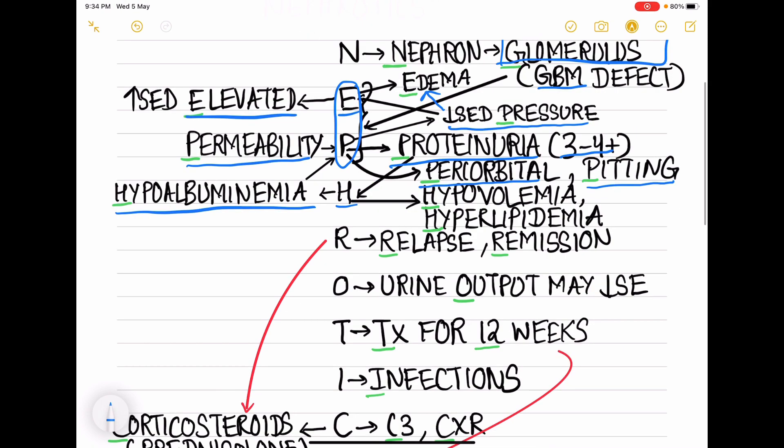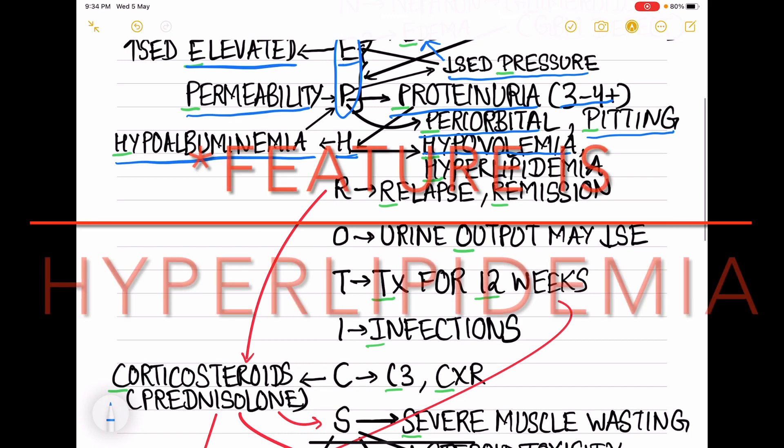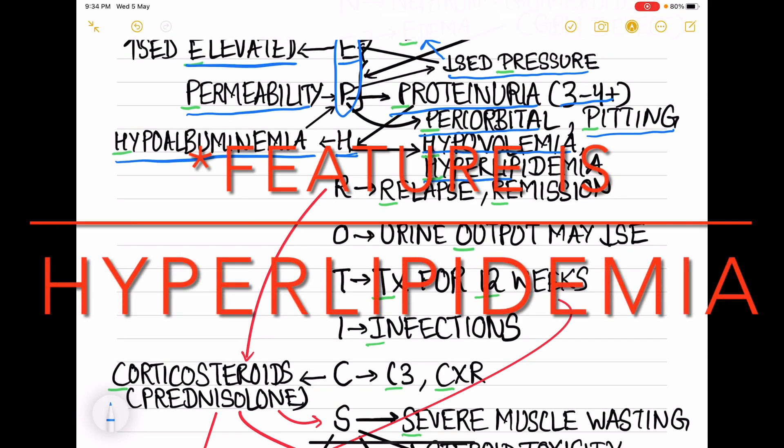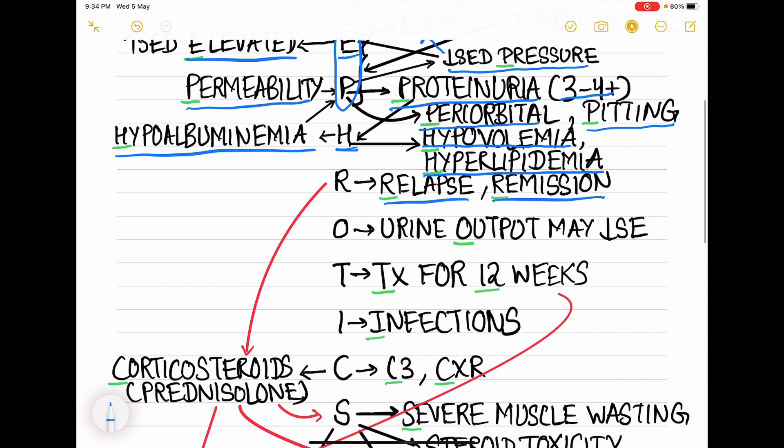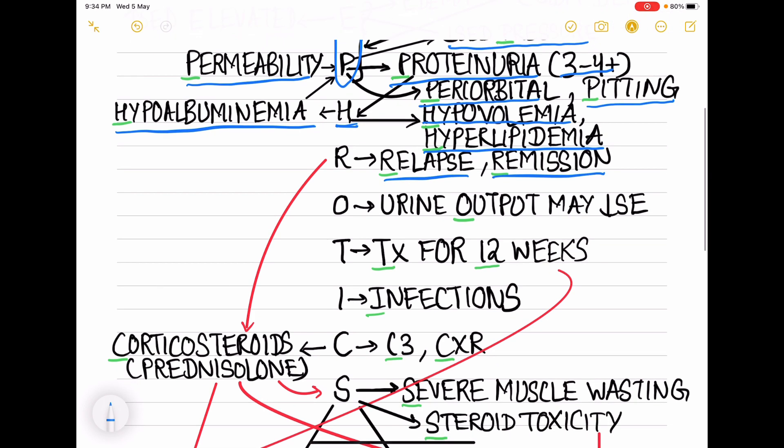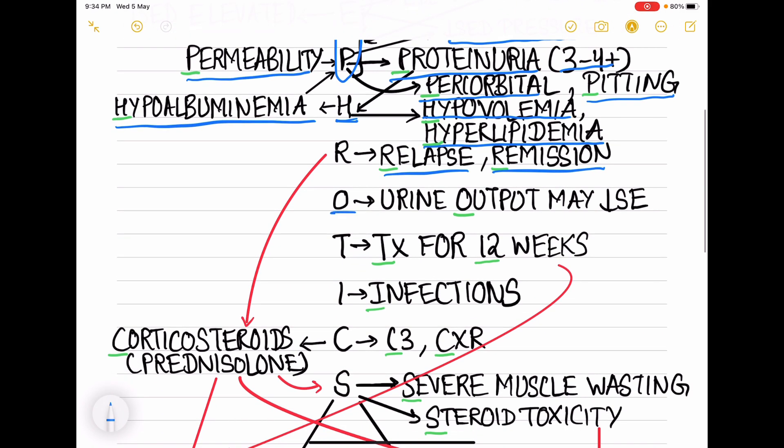From H we see hypovolemia, which also occurs because of decreased oncotic pressure. One more symptom of nephrotic syndrome is hyperlipidemia. Then R stands for relapse and remission - that is, nephrotic syndrome is characterized by relapses and remission. O stands for output - that is, urine output may decrease in case of nephrotic syndrome.